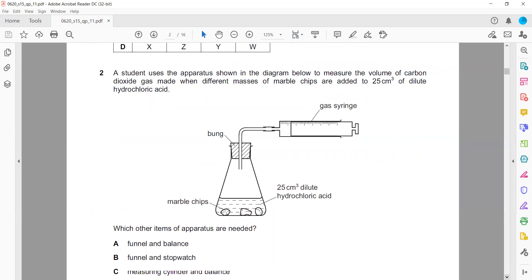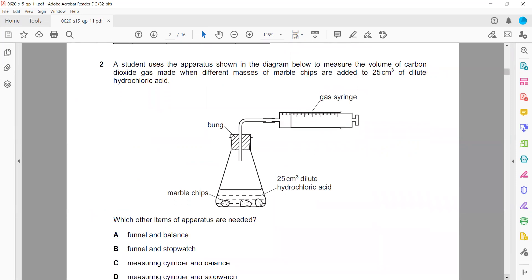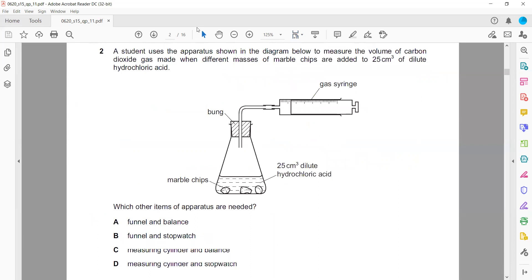A student uses the apparatus to measure the volume of carbon dioxide when different masses are added to 25 cm cubed of hydrochloric acid. How to get the mass? By a balance. How to measure volume of a liquid? By measuring cylinder, burette, or pipette. We need a measuring cylinder as well as a balance.